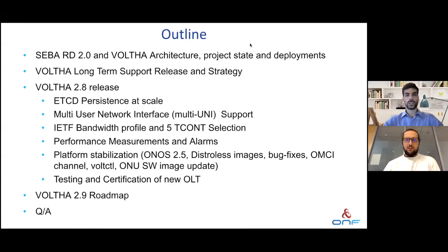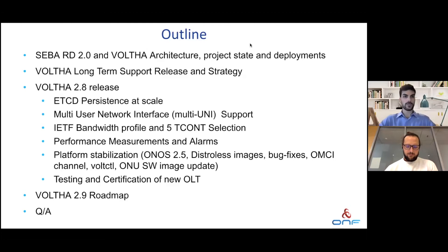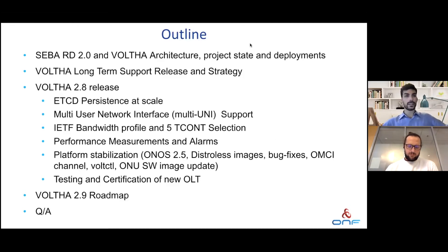We're going to start with a brief recap of the CIBA reference design and the VOLTHA architecture, the project status and deployments, then we'll talk about the long-term support release and strategy for VOLTHA. Then we'll go into detail about the VOLTHA 2.8 release: persistency at scale, multi-user network interface support, IETF bandwidth profile and TCON selection, performance measurements and alarms, platform stabilization, testing and certification. We'll also showcase what we're going to do in 2.9, and at the end we'll have a Q&A session.